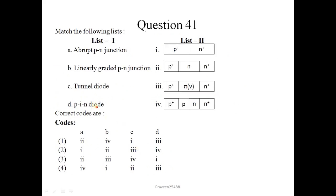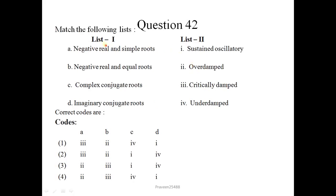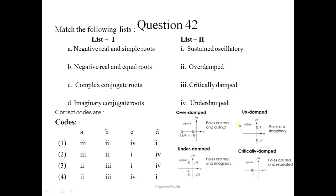Next question is question number 41: Match the following list. Question number 42: Match the following list. In list 1, the location of roots are given. In list 2, there are nature of responses given. Here is the diagram. Negative, real and simple roots is shown in this diagram - it represents over damped. Negative, real and equal roots shown in this diagram represents critically damped. Complex conjugate roots shown in this diagram represents under damped. Imaginary conjugate roots represents sustained oscillatory or undamped. Correct option is 2, 3, 4 and 1. Option number 4 is correct.